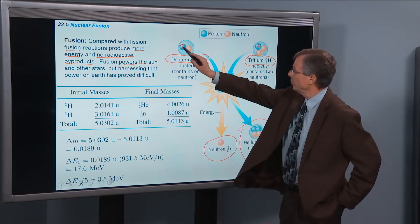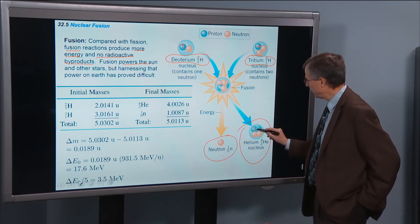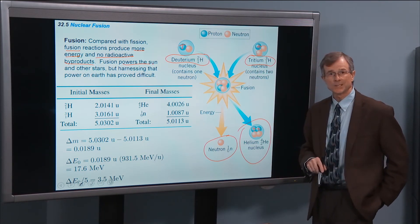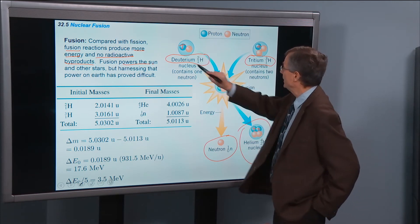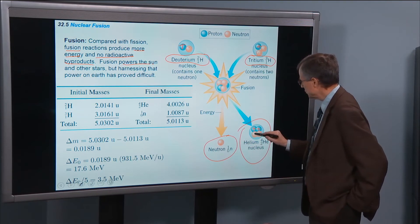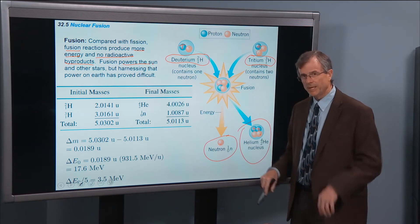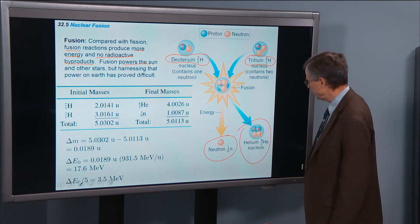We started off with one, two protons. We ended up with one, two protons. We started off with one, two, three neutrons. We ended up with one, two, three neutrons, with one of the neutrons separating out from the helium nucleus.